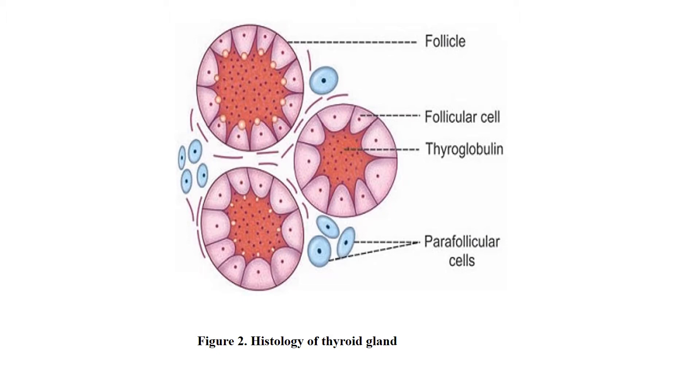Thyroid receives a very rich blood supply. The amount of blood received by the thyroid per minute is 5 times more than its weight.